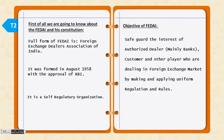First of all, we are going to know about FEDI and its constitution. The full form of FEDI is Foreign Exchange Dealer Association of India. It was formed in August 1958 with the approval of RBI. FEDI is a self-regulatory organization. FEDI's main objective is to develop uniform rules in the foreign exchange market and apply them to safeguard authorized dealers, customers, and other players.